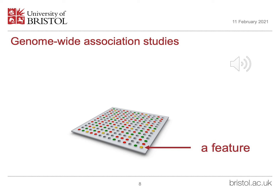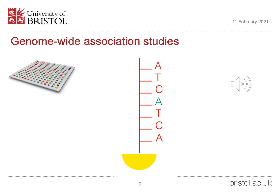A microarray is a glass slide that is printed with thousands of tiny spots at specifically defined positions. Each spot is called a feature, and there may be more than a million different features on a single microarray. Each feature on a microarray contains a small fragment of single-stranded DNA, which may be 40 to 60 nucleotides long — in other words, between 40 and 60 DNA bases in a specific sequence. Each individual feature will contain many copies of this identical sequence of DNA.